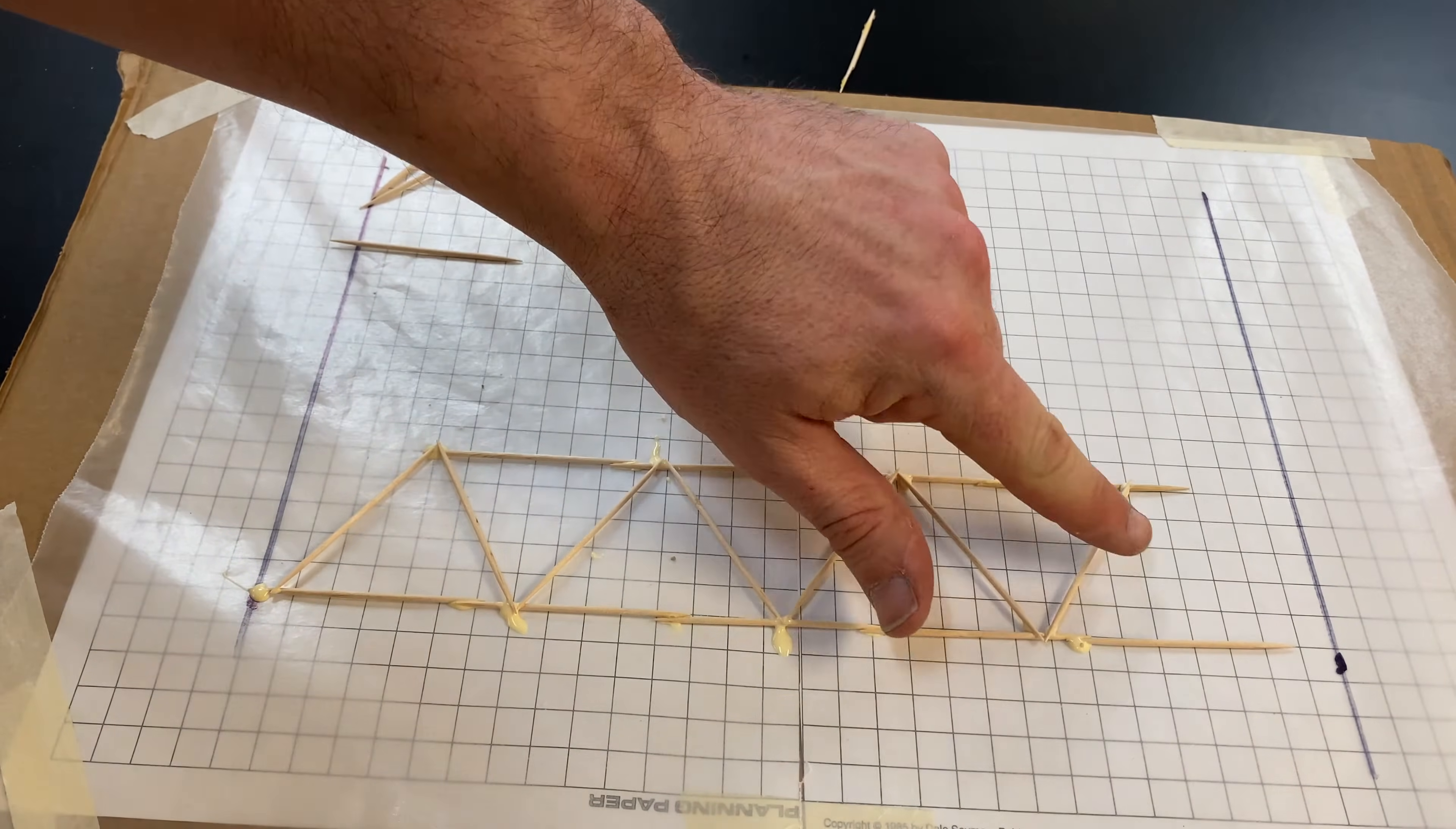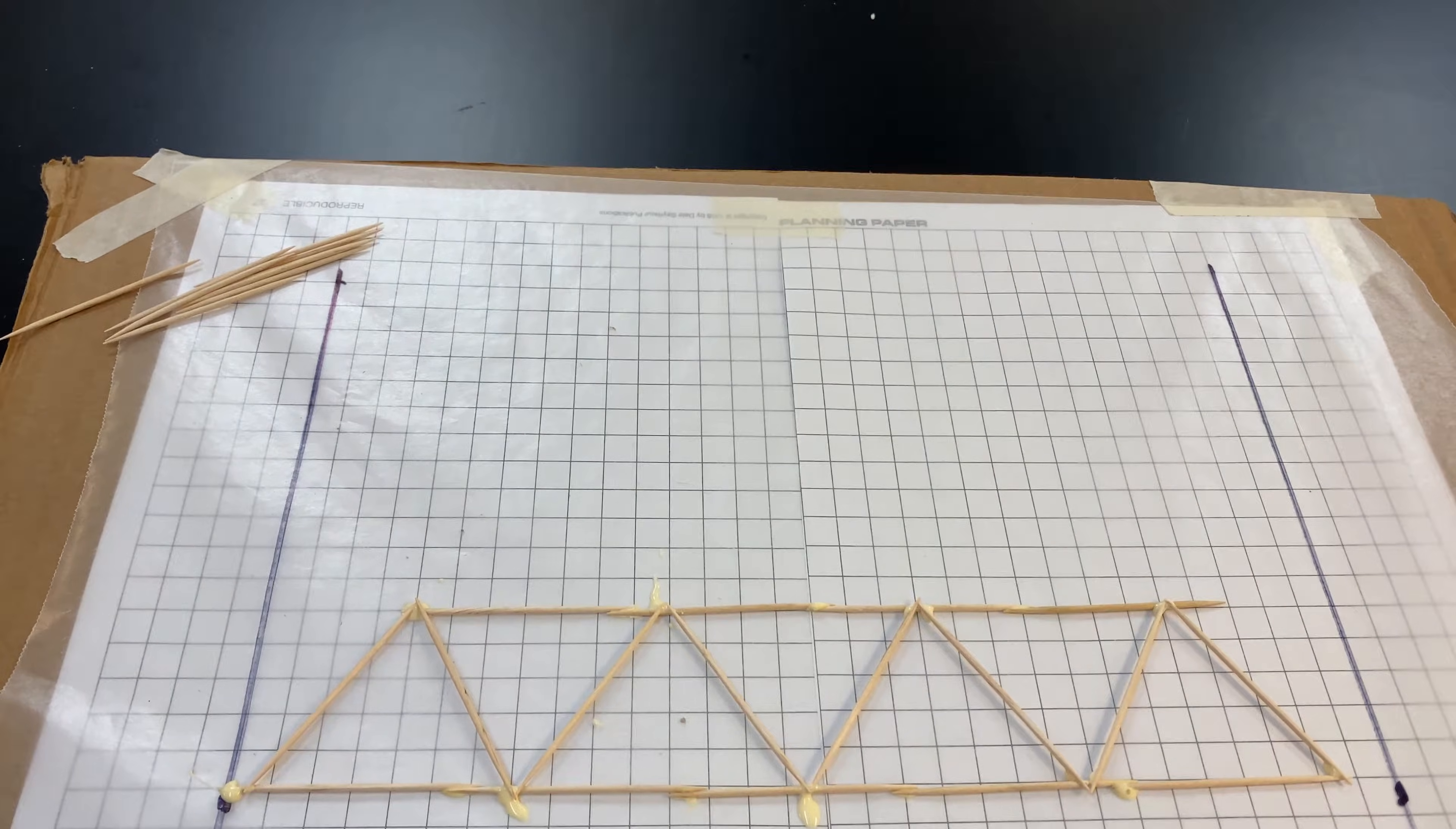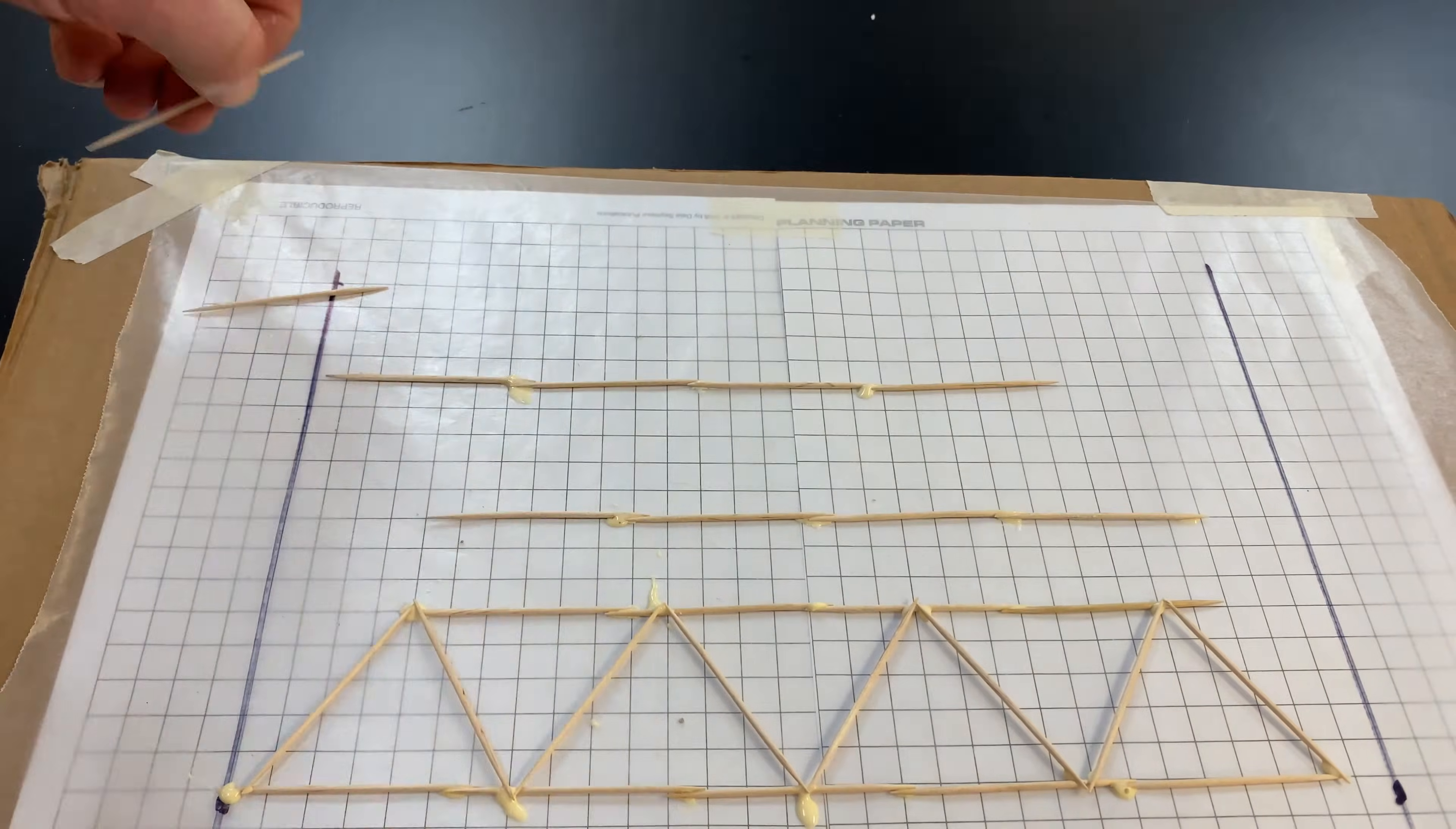As you can see, my bridge is just a centimeter short of 30 centimeters long, but that won't be a problem. You'll see why later. We need to build two sides.